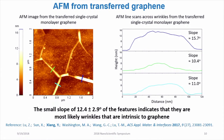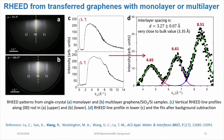This indicates that those features are most likely wrinkles, which are intrinsic to graphene, because the slope is relatively small. As a second example, I want to show how we can determine the lattice constant or interlayer spacing by looking at the RHEED pattern.